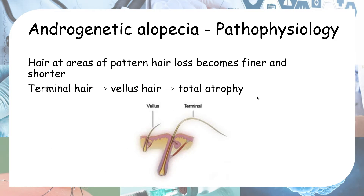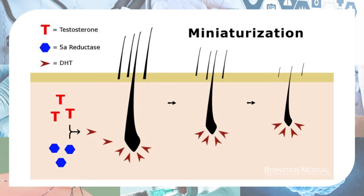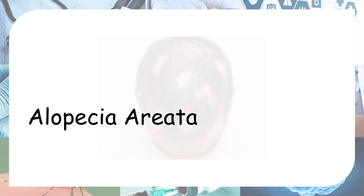What causes androgenetic alopecia? It comes down to miniaturization — the transformation of long, thick terminal hair into thin, short vellus hair, and eventually the hair can go into total atrophy. As seen in this diagram, testosterone is converted by the enzyme 5-alpha reductase into DHT (dihydrotestosterone), and it is this DHT that causes the miniaturization of hair.